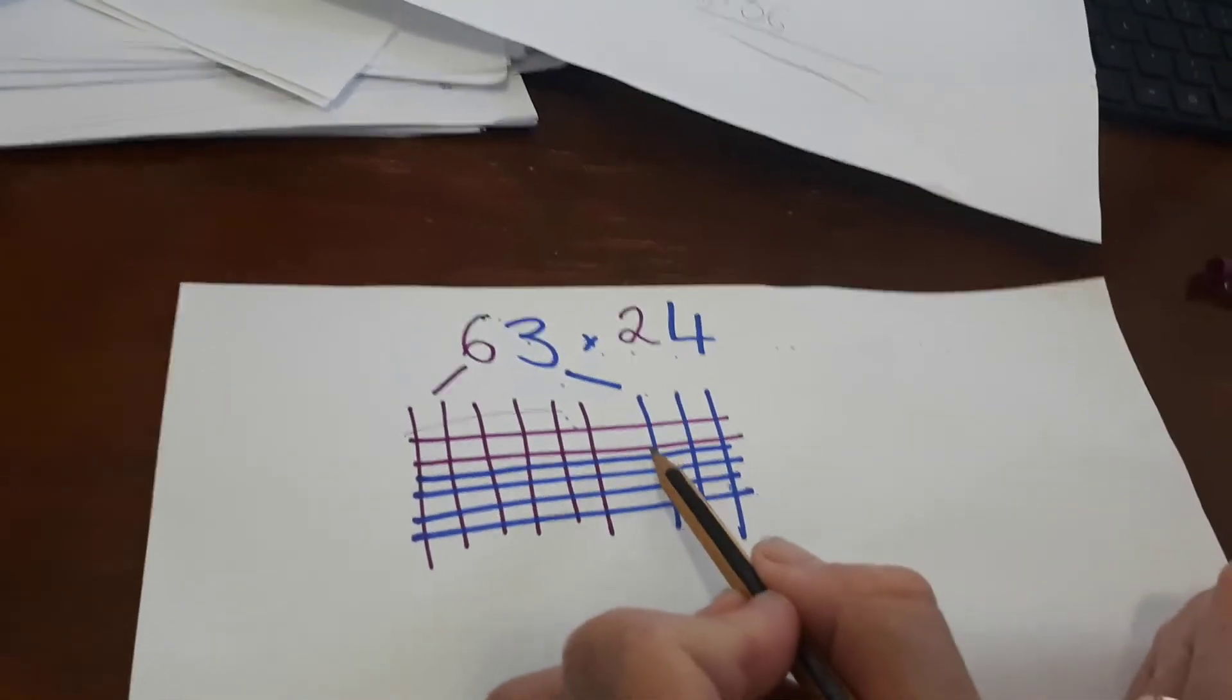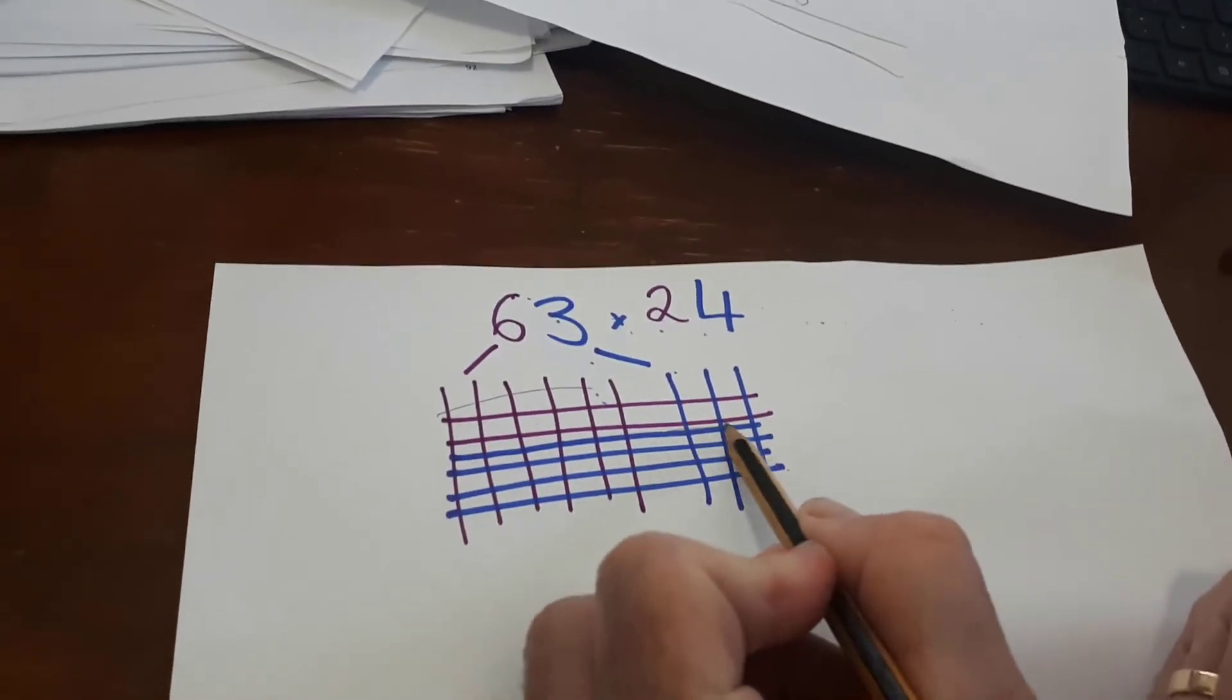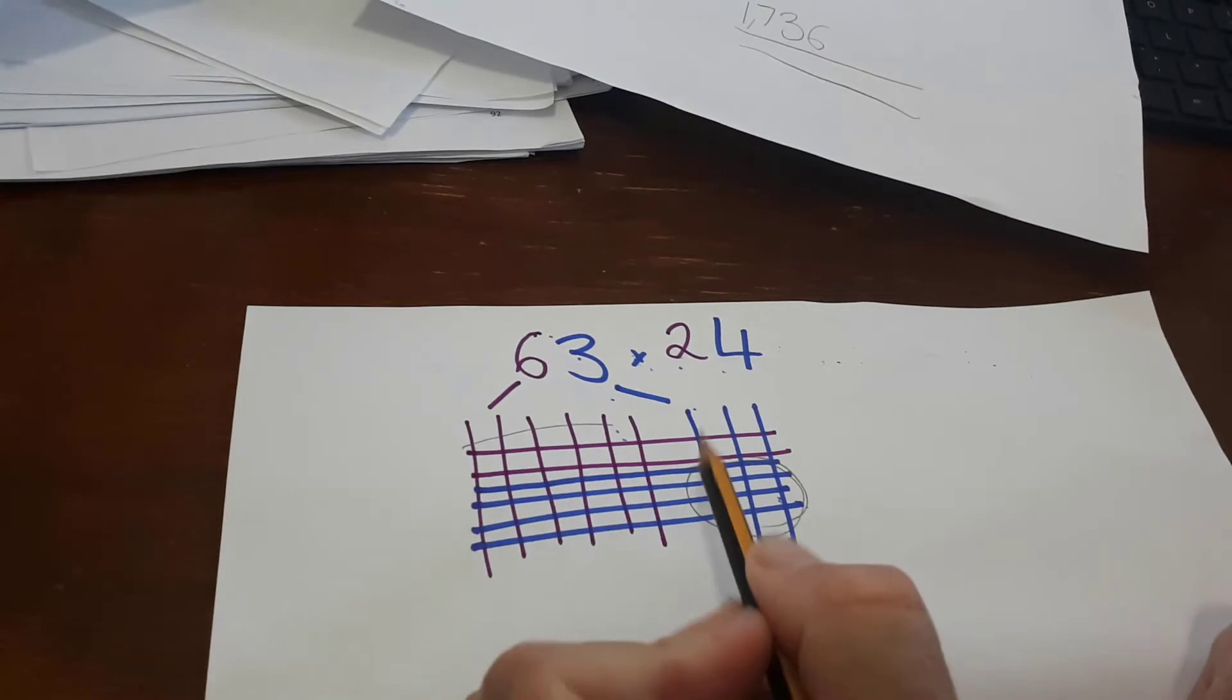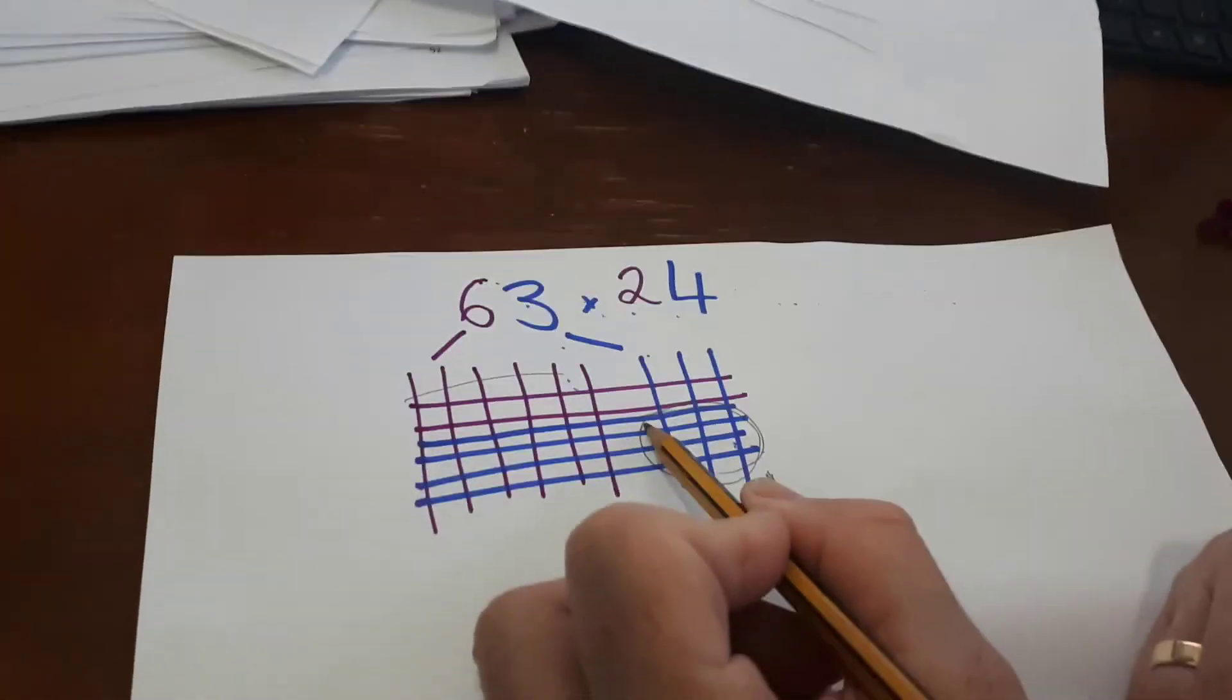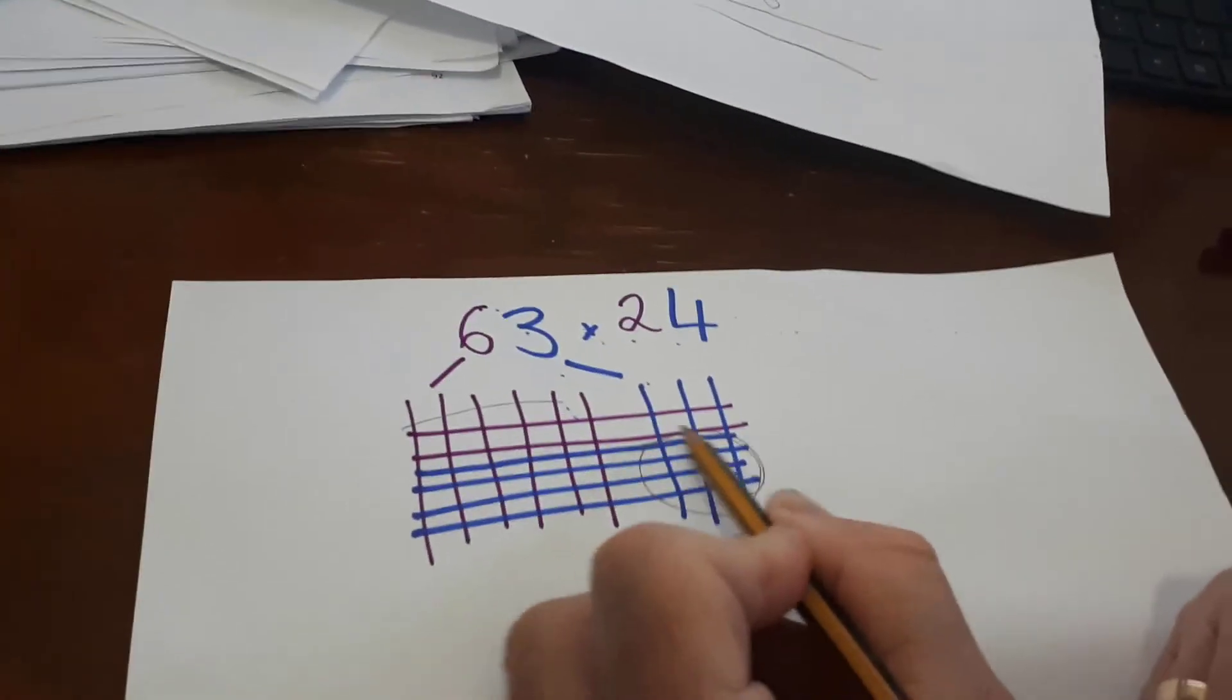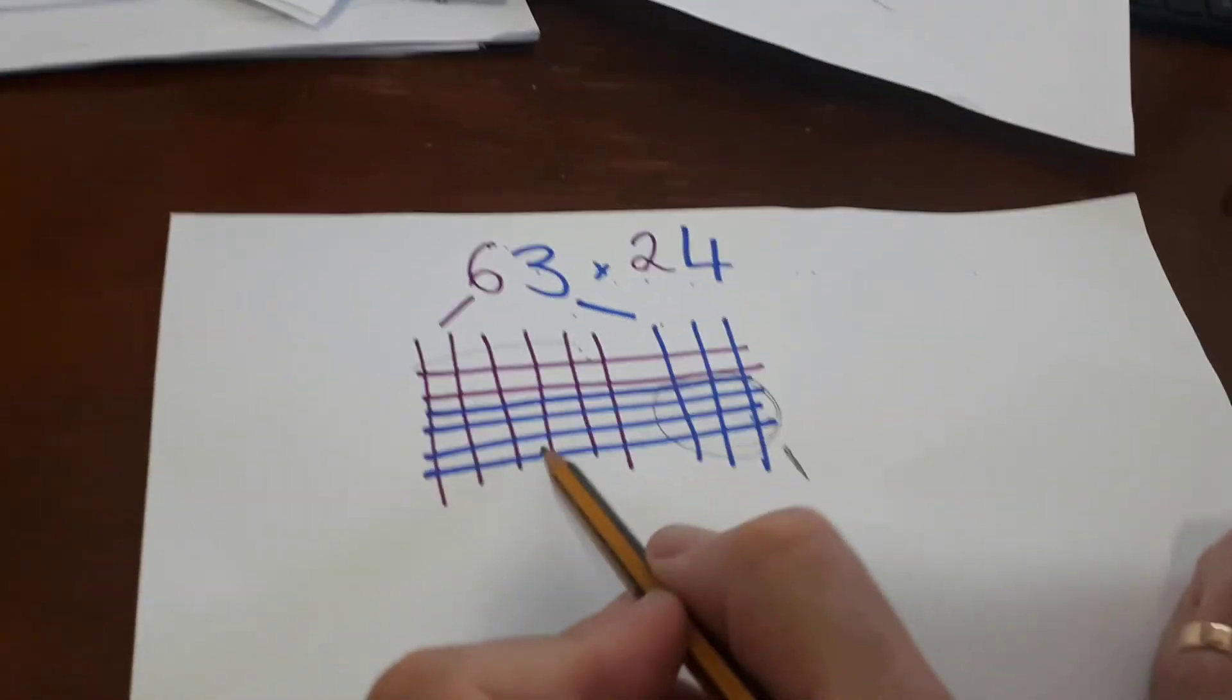So always the ones first. So these ones here are the ones. Yes. So the blue and blue. These are the ones. Not just the blue. Isn't it these ones? Yeah. They're the ones and then the other side are the tens. That's right.